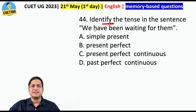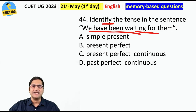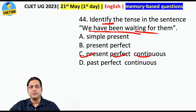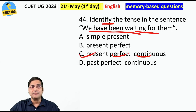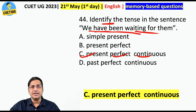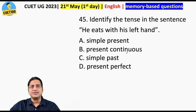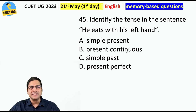Identify the tense in the sentence. 'We have been waiting for them' — this is certainly present perfect continuous. 'I have been waiting for you,' 'He has been playing for the last five years' — all present perfect continuous. Next: 'He eats with his left hand' — he eats, simple present.